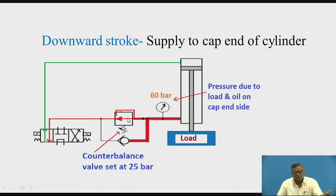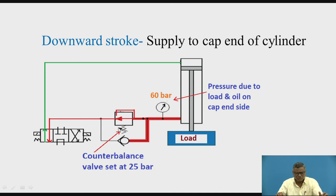So the valve spool has been shifted and the inlet is connected to the outlet. We are having the flow through the counterbalance valve going to port B, and B is connected to T. The pressure must be more than the counterbalance valve set pressure — if it is like that, then only the valve is going to open and allow the flow through it.